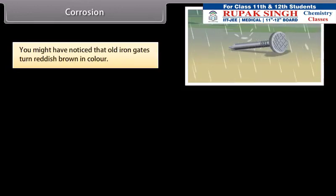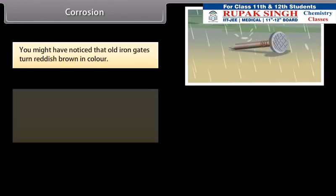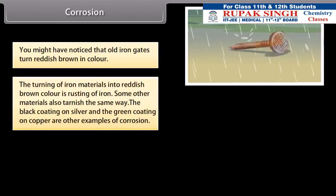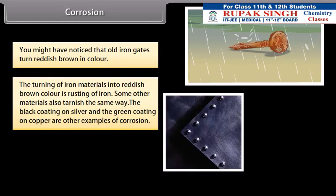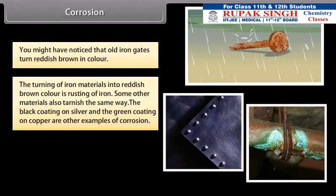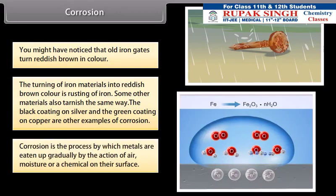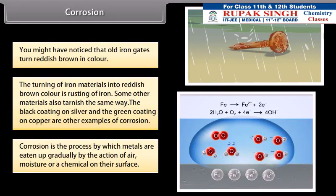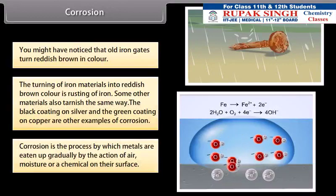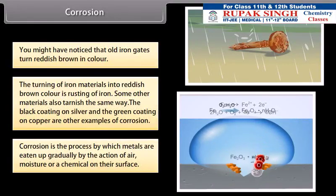Corrosion: You might have noticed that old iron gates turn reddish-brown in color. The turning of iron materials into reddish-brown color is rusting of iron. Some other materials also tarnish the same way. The black coating on silver and the green coating on copper are other examples of corrosion. Corrosion is the process by which metals are eaten up gradually by the action of air, moisture, or a chemical on their surface.